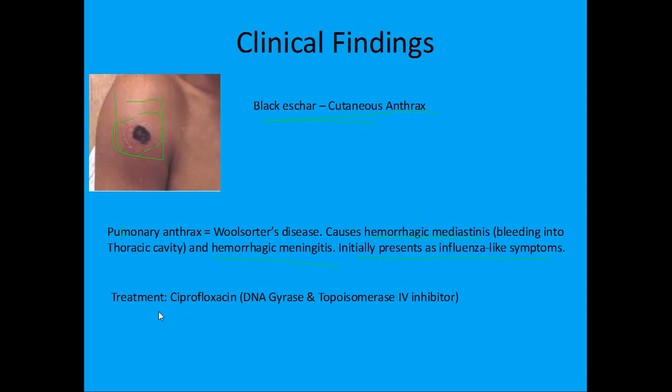Treatment for anthrax is ciprofloxacin, which is a DNA gyrase inhibitor. People often forget it also inhibits topoisomerase 4, so it is a DNA gyrase and topoisomerase 4 inhibitor.